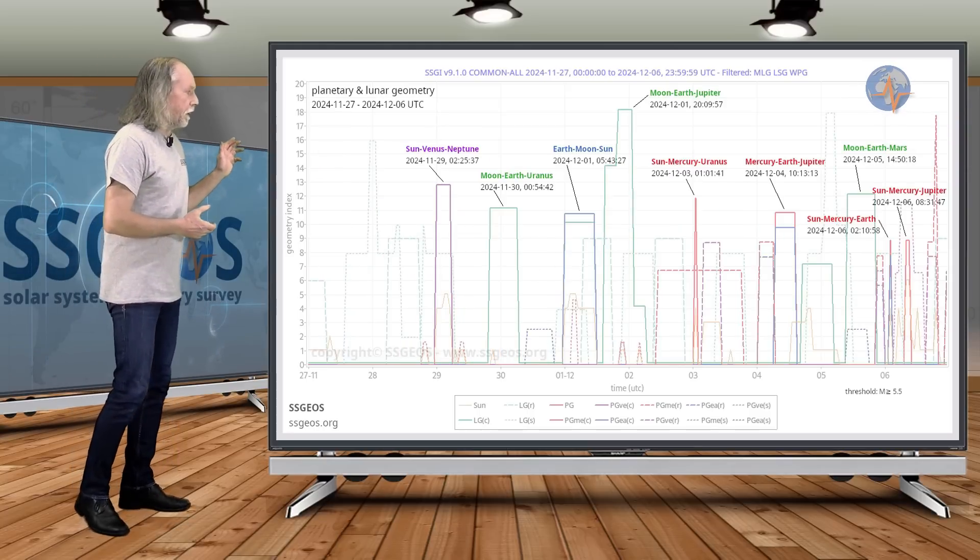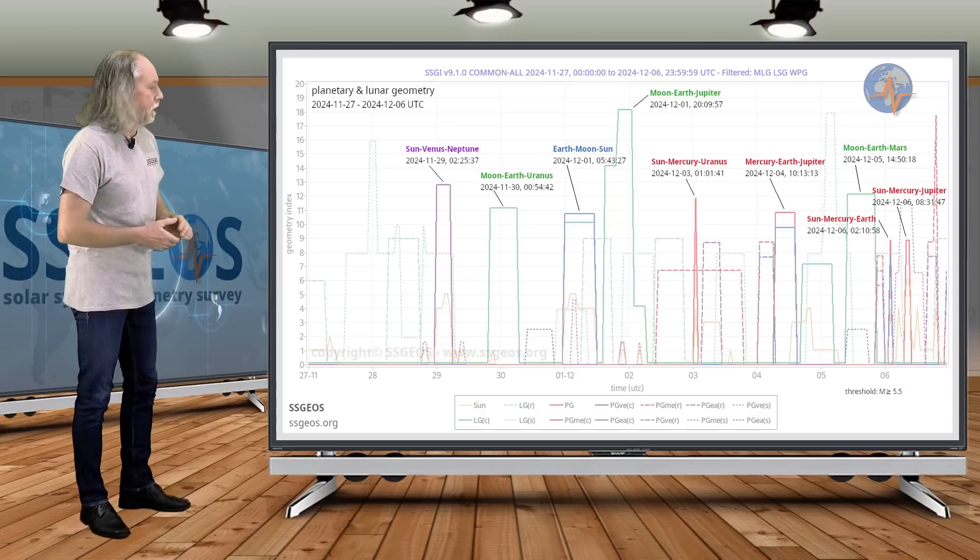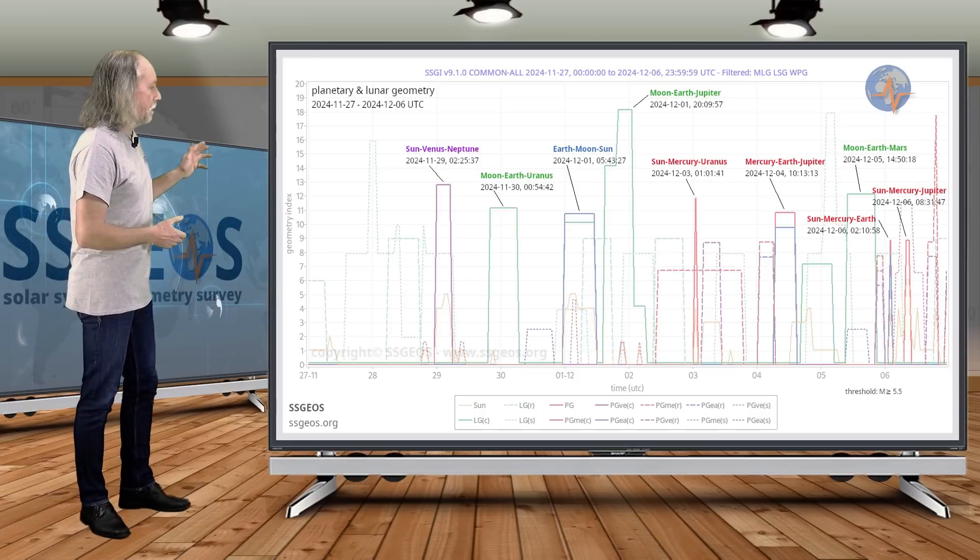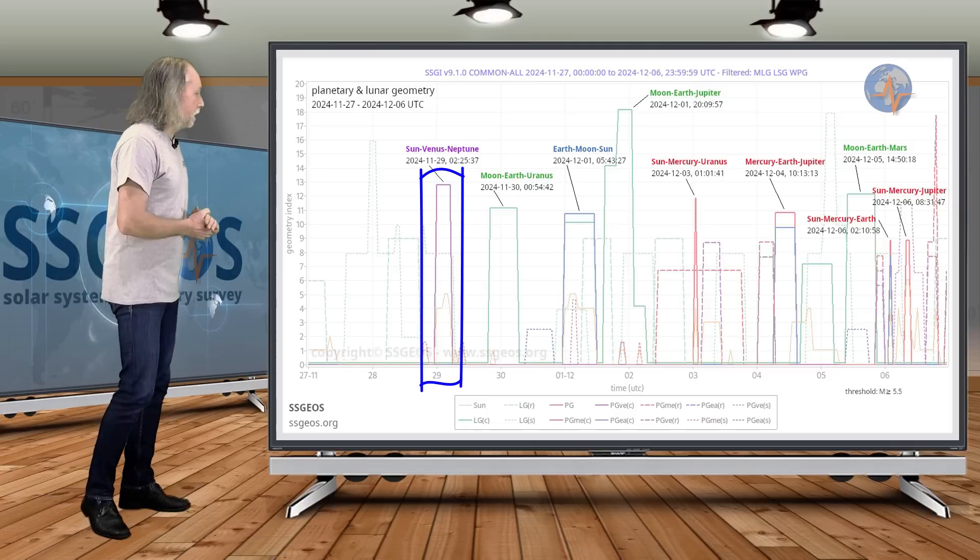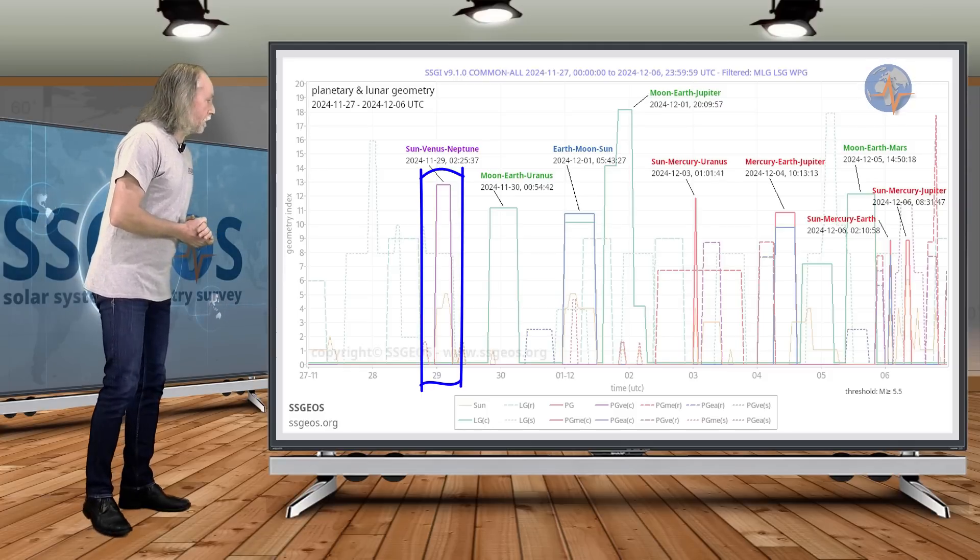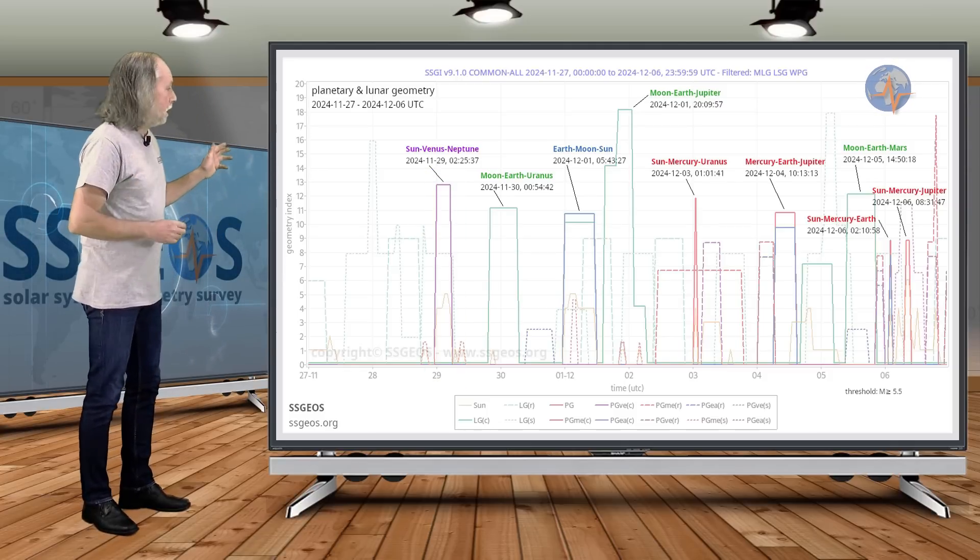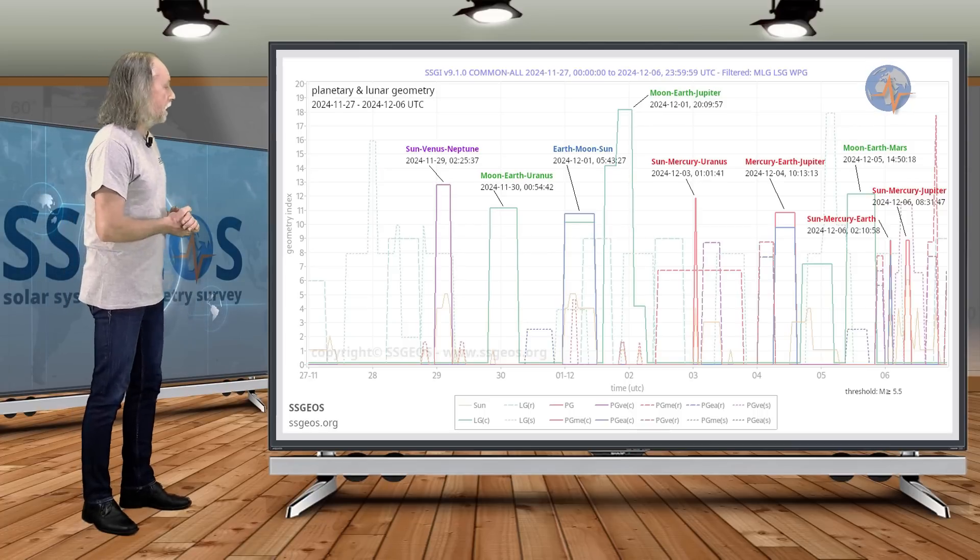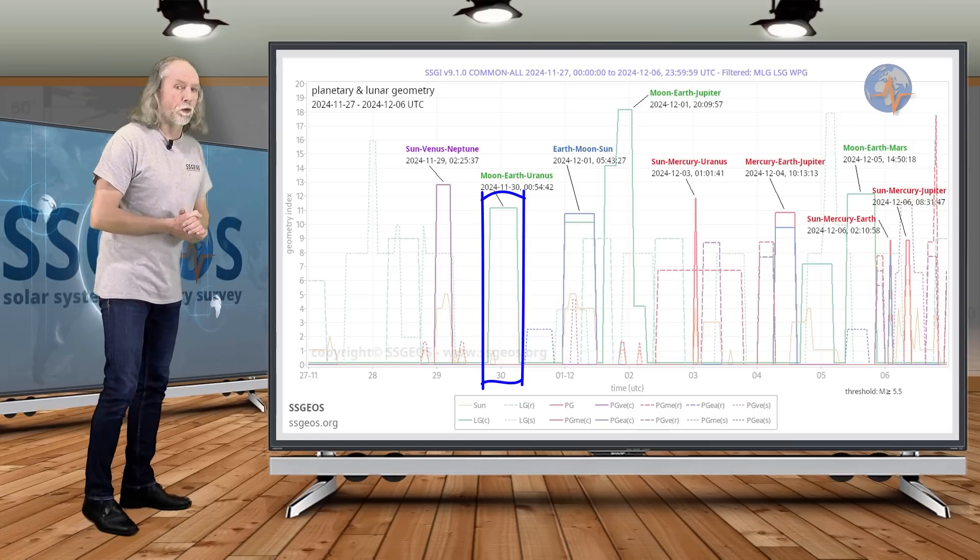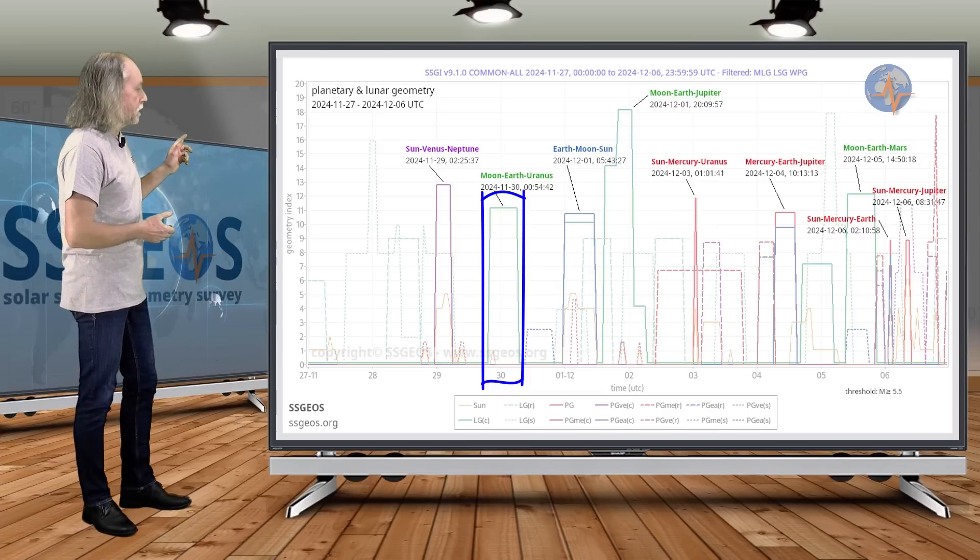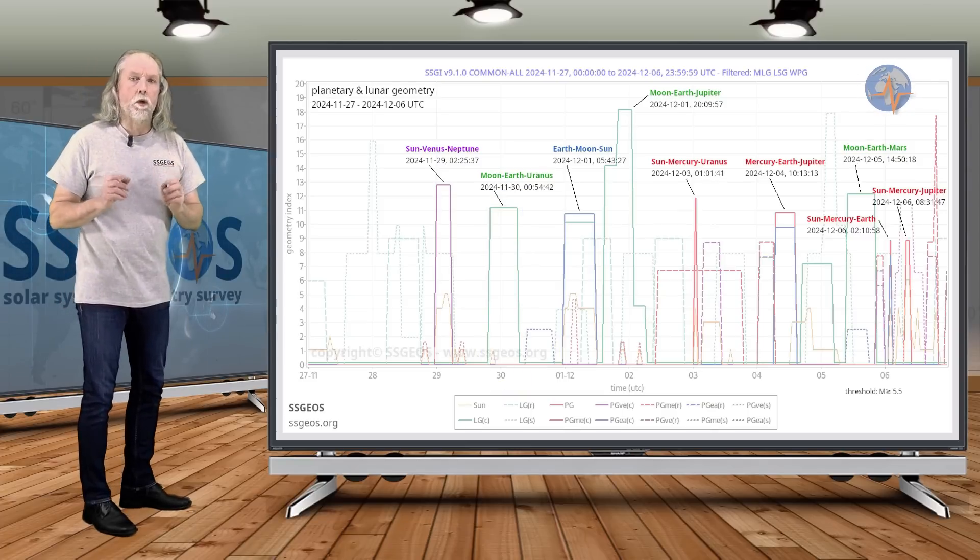So no large earthquakes and yes the Earth is in seismically quiet periods since August and averages are really low. So let's have a look at the next time frame. We see Sun, Venus, Neptune coming up tomorrow in a conjunction. No that's actually today already as we speak basically, and then we have lunar peak that's Moon, Earth and Uranus in a conjunction. Now Sun, Venus, Neptune, that's something to be aware of.